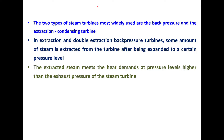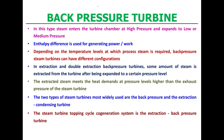In extraction and double extraction backpressure turbines, some amount of steam is extracted from the turbine after being expanded to a certain pressure level. The extracted steam meets the heat demands at pressure levels higher than the exhaust pressure of the steam turbine. In the backpressure type, steam enters the turbine chamber at high pressure and expands to low or medium pressure. The enthalpy difference is used for generating power or work. Depending on the temperature level required, backpressure steam turbines can have different configurations.